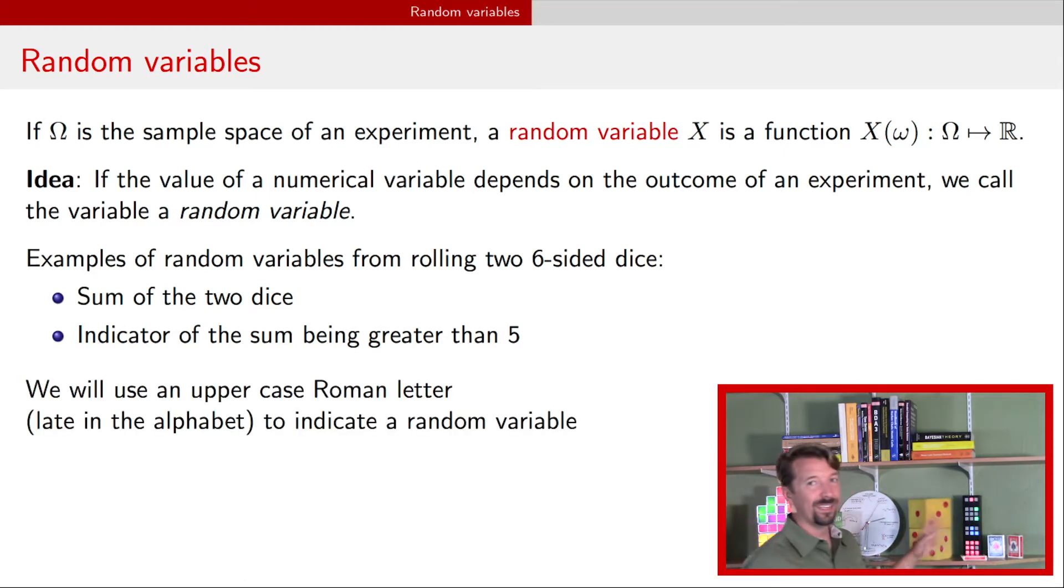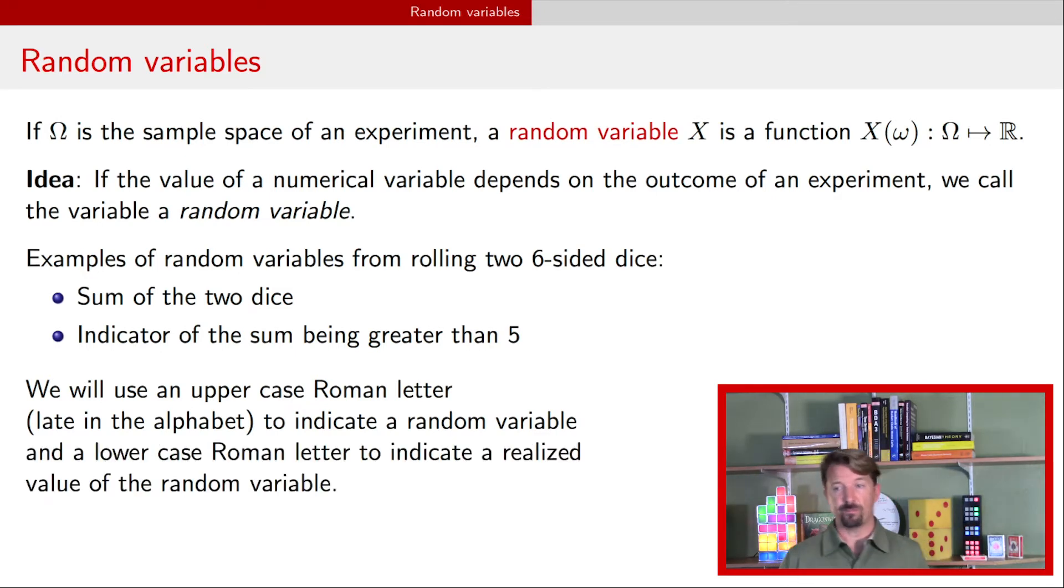Throughout my discussion of random variables here, I'm going to be using capital letters, capital Roman letters, to indicate random variables, and usually these will be letters at the end of the alphabet, like X, Y, Z. If we want to distinguish between the random variable and the observed quantity of that random variable, the observed quantity will be a lowercase Roman letter, like lowercase x, y, z. This is in contrast to when we were talking about events, where the convention that I used was to use capital letters at the beginning of the alphabet for those events.